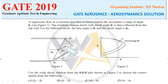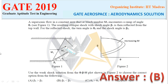Next question: a supersonic flow in a constant area duct at Mach number M1 encounters a ramp of angle θ1. The resulting oblique shock wave with shock angle β1 is then reflected from the top wall. The reflection shock has turning angle θ2 and shock angle β2. Using weak shock solutions from the θ-β-M plot, as θ1 increases β1 also increases. From this, we can directly say that β2 is greater than β1. So the right option is option B.